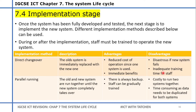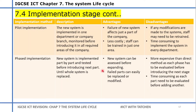A second method is parallel running, meaning you run the old and the new system together until the new system completely takes over. Advantages are that there's always a backup — the old system is still running — and staff can be gradually trained on the new system over time. Disadvantages are that it's costly to run two systems together, and time consuming as data needs to be duplicated for both systems.